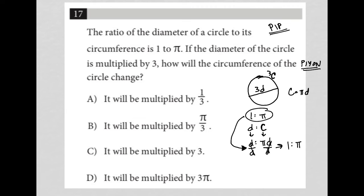So if d was equal to 2, then c would equal 2π, right? Again, because circumference is π times d. If we then multiply our diameter by 3, that makes our new diameter equal to 6.